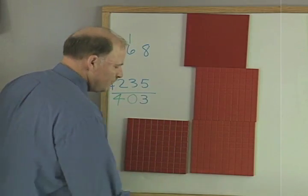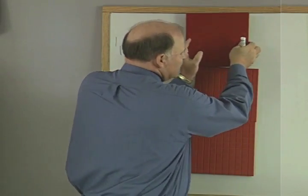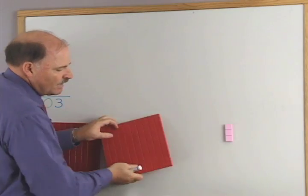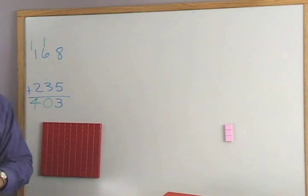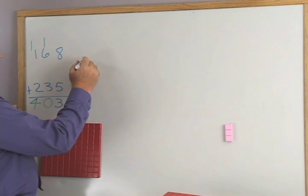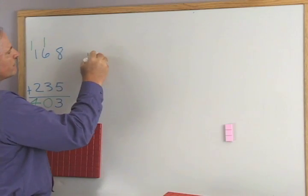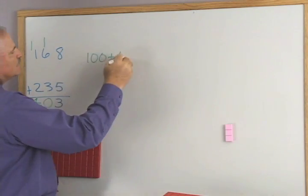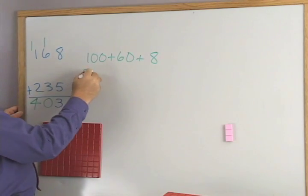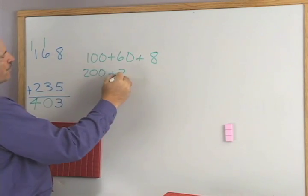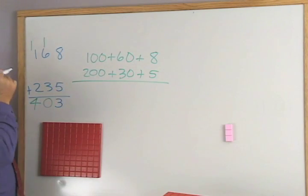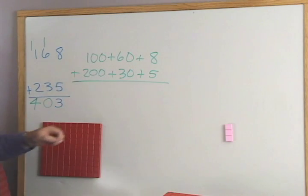Okay, now I'm going to do this same problem with place value notation. Remember place value notation? How would I write 168 with place value notation? 100 plus 60 plus 8, good. How to write this one? 200 plus 30 plus 5. So we're just breaking them up into place values. Now let's go ahead and add. What's 5 plus 8?